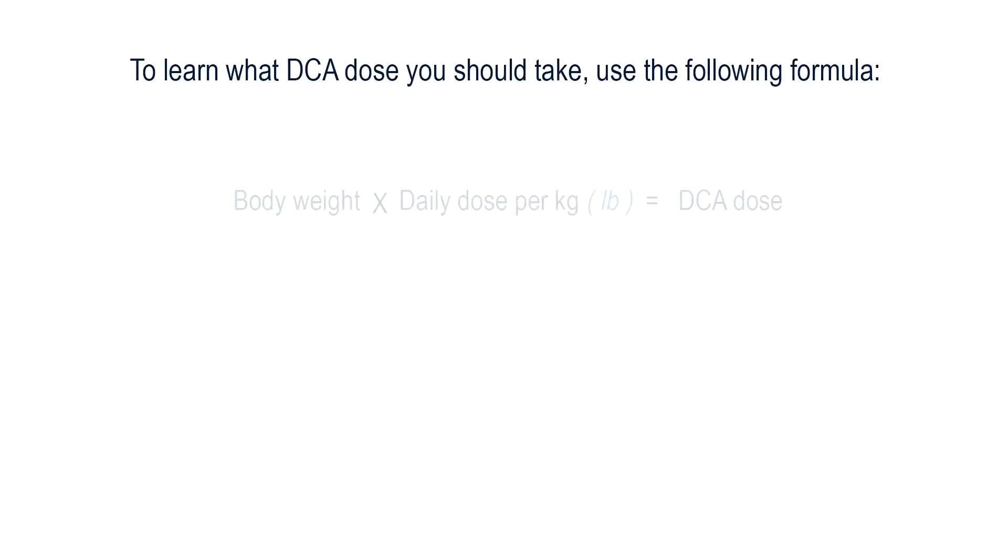Firstly, in order to learn what DCA doses you should take, use this basic formula. Multiply your body weight in kilograms or pounds by the daily dose norm you wish to consume. For example, if you weigh 72 kilograms, which would be 158.7 pounds, and you choose a moderate dose, multiply this by 25 and you will get your result.